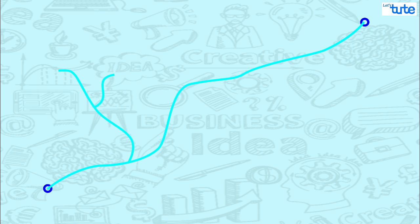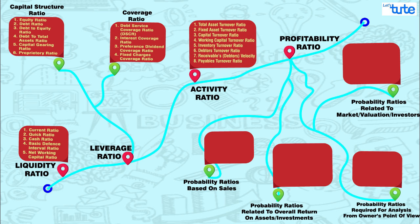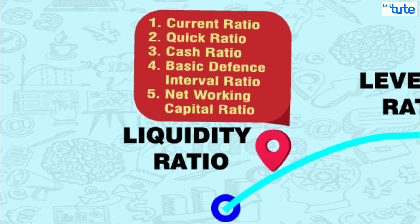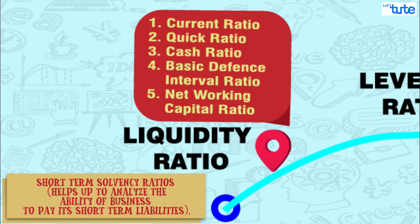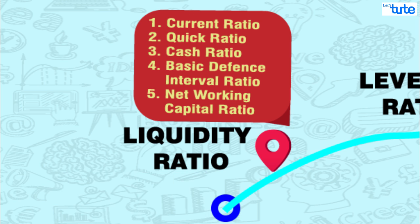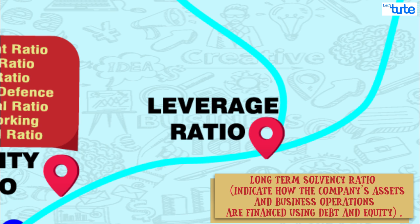Let us first see the basic types of ratios. Depending upon the requirements and usage, ratios can be classified in many ways. But here, we have broadly classified ratios into four main categories. The first one is liquidity ratios or short-term solvency ratios, which help us analyze the ability of a business to pay its short-term liabilities. The second is leverage ratios or long-term solvency ratios, which indicate how the company's assets and business operations are financed using debt and equity, and it measures the long-term stability of the company.